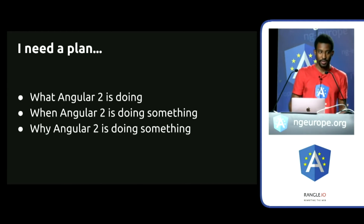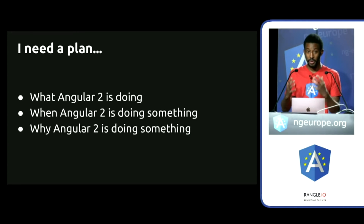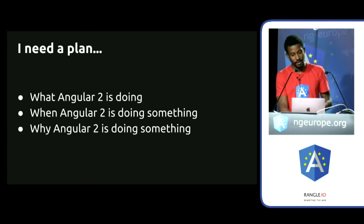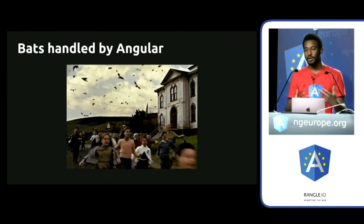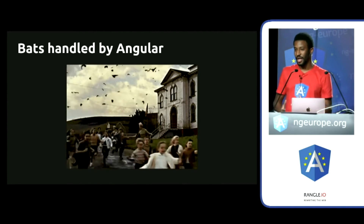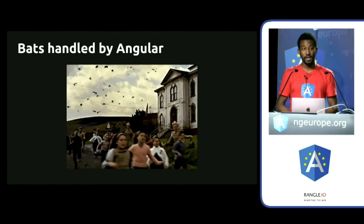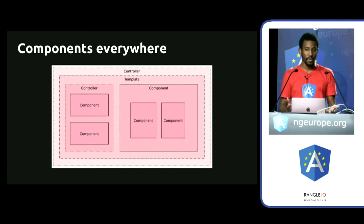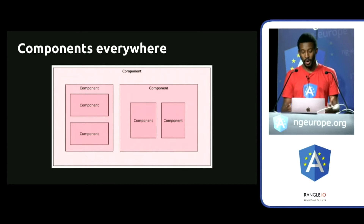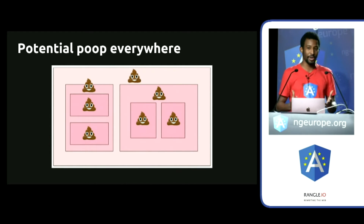I wanted to know what Angular was doing in my application — when it was doing something and why — so I have better knowledge about what's going on. I had this picture that I'm programming some kind of free agents that have their own life, and Angular is dealing with it. Even if I'm programming something, I don't really know how they're living. Sometimes they're eating, sometimes they're sleeping, but Angular is doing it for me. So I need to look inside. When I say bats, I mean components — because from Angular 1 to Angular 2, everything is going components.